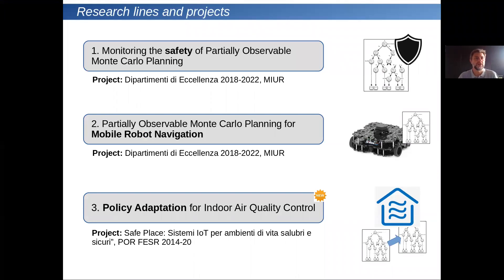The work presents three research lines. The first is about monitoring the safety of partially observable Monte Carlo planning, developed in a project called Dipartimenti di Eccellenza. The second research line, developed in the same project, is about partially observable Monte Carlo planning for mobile robot navigation. The third research line is about policy adaptation for indoor air quality control, developed in a project called SafePlace.